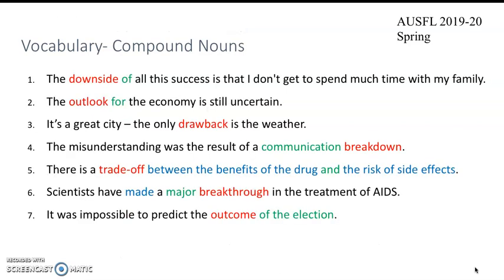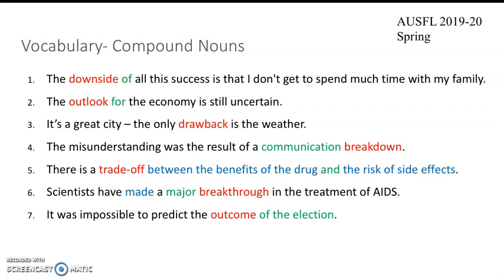Let's take a look at the meaning of these words in more detail. Number one: the downside of all this success means the disadvantage of this success, and it is used with the preposition of or to. So you can say the downside of all this success or the downside to all this success. The outlook for the economy means the expectation about the future of the economy, and it is used with the preposition for.